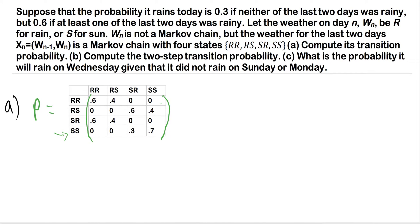So let's start with sunny sunny, just because that's the first sentence of the problem. It says suppose the probability it rains today is 30% if neither of the last two days was rainy. So we've got day one and day two, and now this is going to be day two, day three.